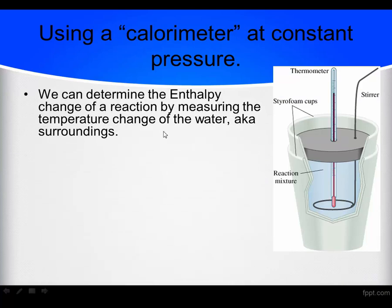We can determine the enthalpy change, the delta H of a reaction, by measuring the temperature change of the water, the surroundings in a reaction. Usually this is done in some sort of system where you can keep the pressure constant. There's a picture of a really cheap setup that would measure calorimetry at constant pressure. Two styrofoam cups, a top, a stirrer, and a thermometer so you can keep the system closed so the pressure stays the same.